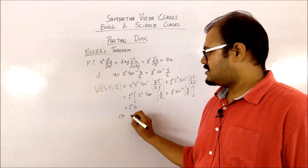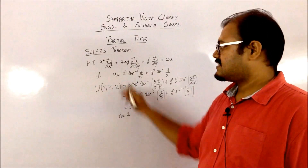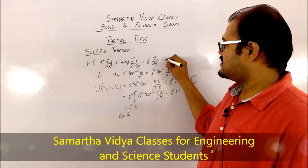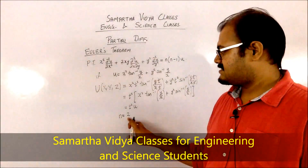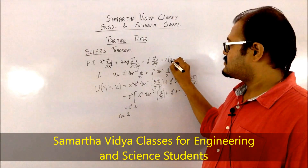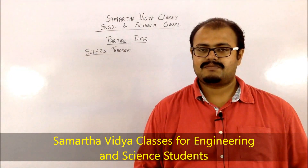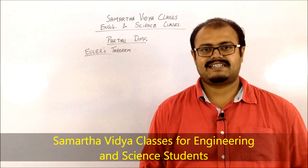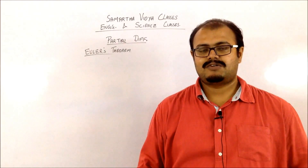You can see that you are getting t square into the original function u, so your n — the order of the homogeneous function — is 2. By the extended version of Euler's theorem, the value is given by n·(n−1)·u. Substituting n = 2, this becomes 2·(2−1)·u = 2·u, which is exactly what we had to prove.